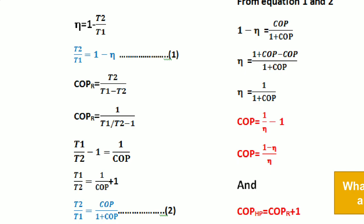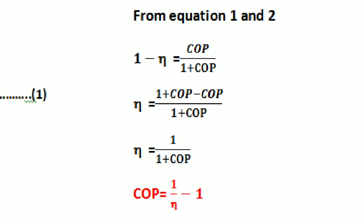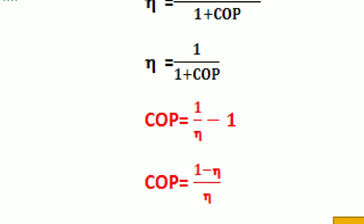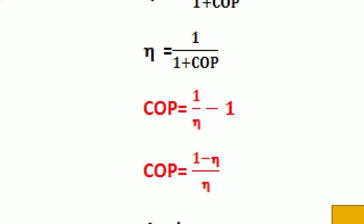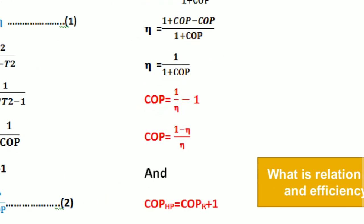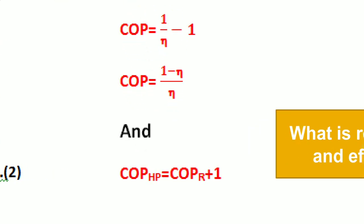Comparing equation 1 and equation 2, the left-hand side T2/T1 is the same, so we equate the right-hand sides: 1 minus efficiency = COP/(1 + COP). Rearranging, efficiency = (1 + COP minus COP)/(1 + COP). The COP terms cancel, giving efficiency = 1/(1 + COP), or equivalently COP = 1/efficiency of the engine.